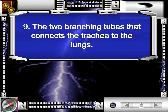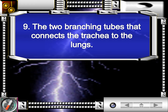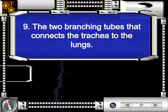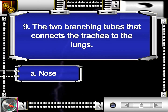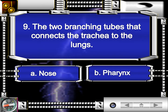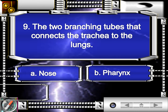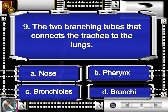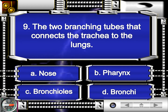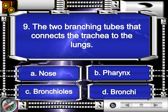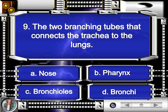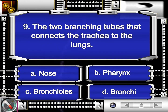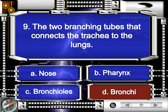Question number nine. The two branching tubes that connect the trachea to the lungs. A, nose. B, pharynx. C, bronchioles. D, bronchi. The correct answer is letter D, bronchi.